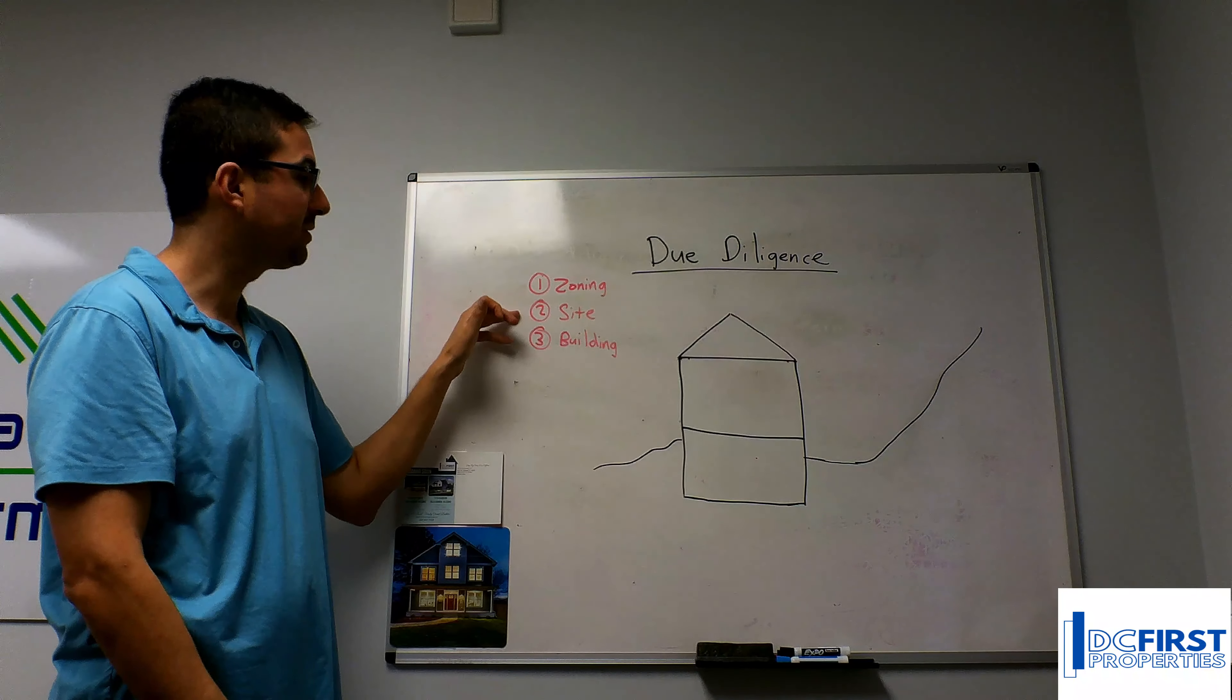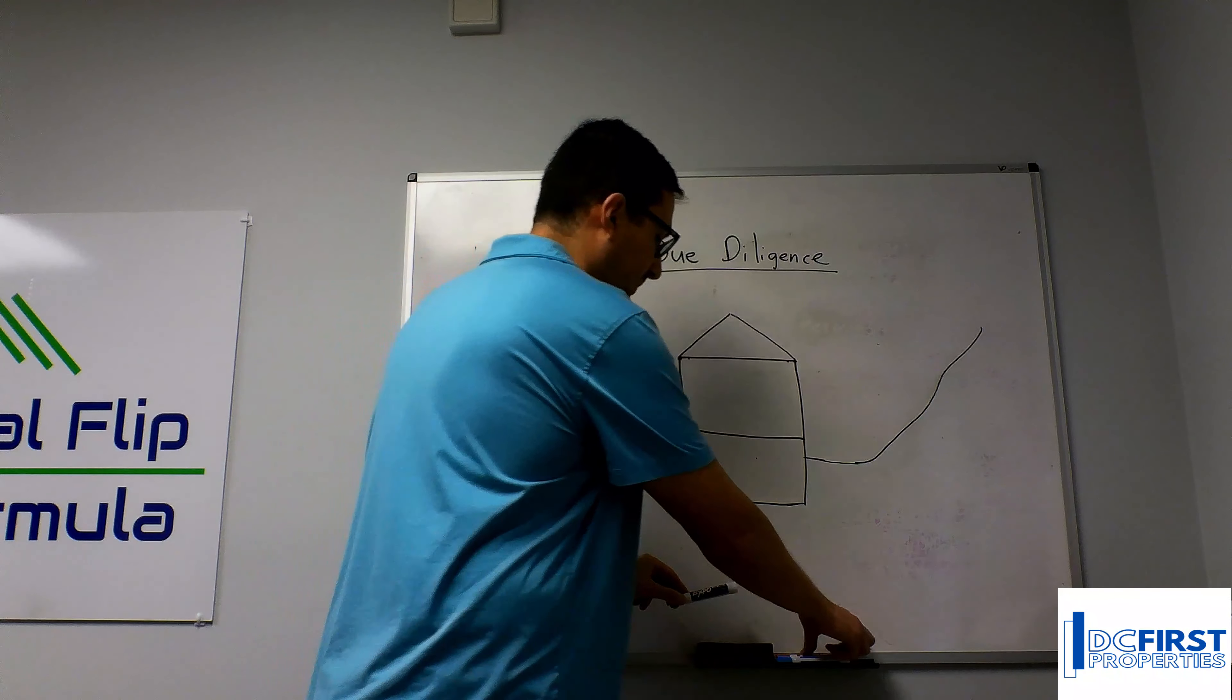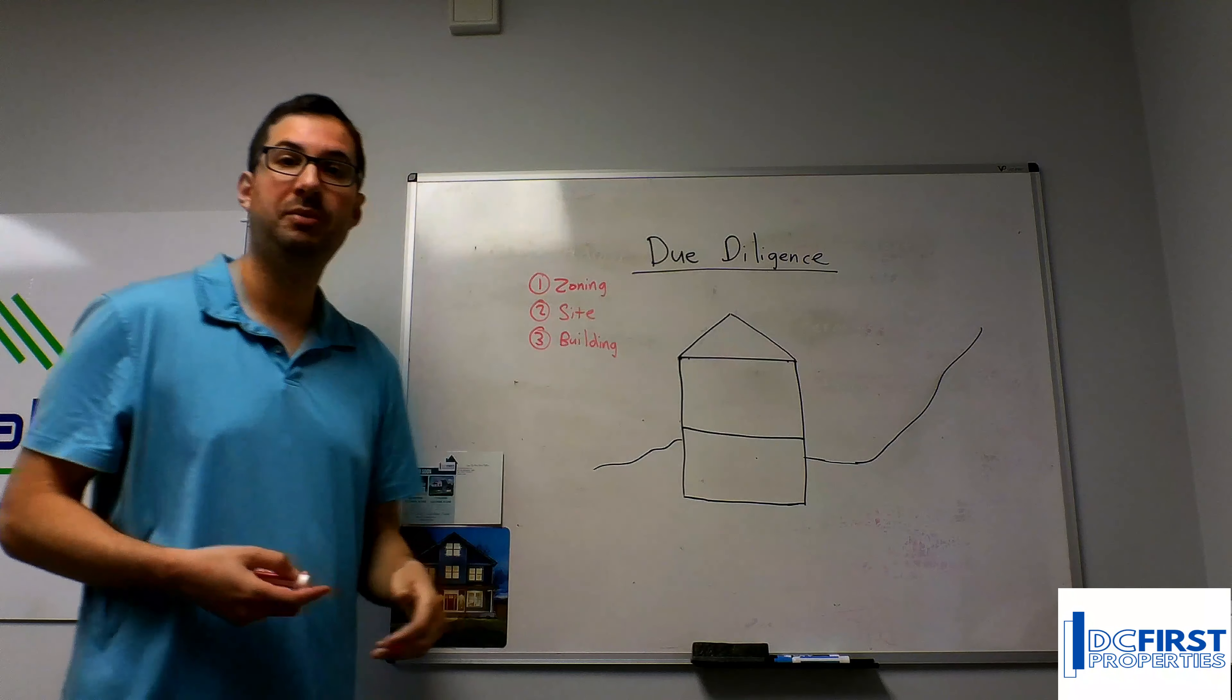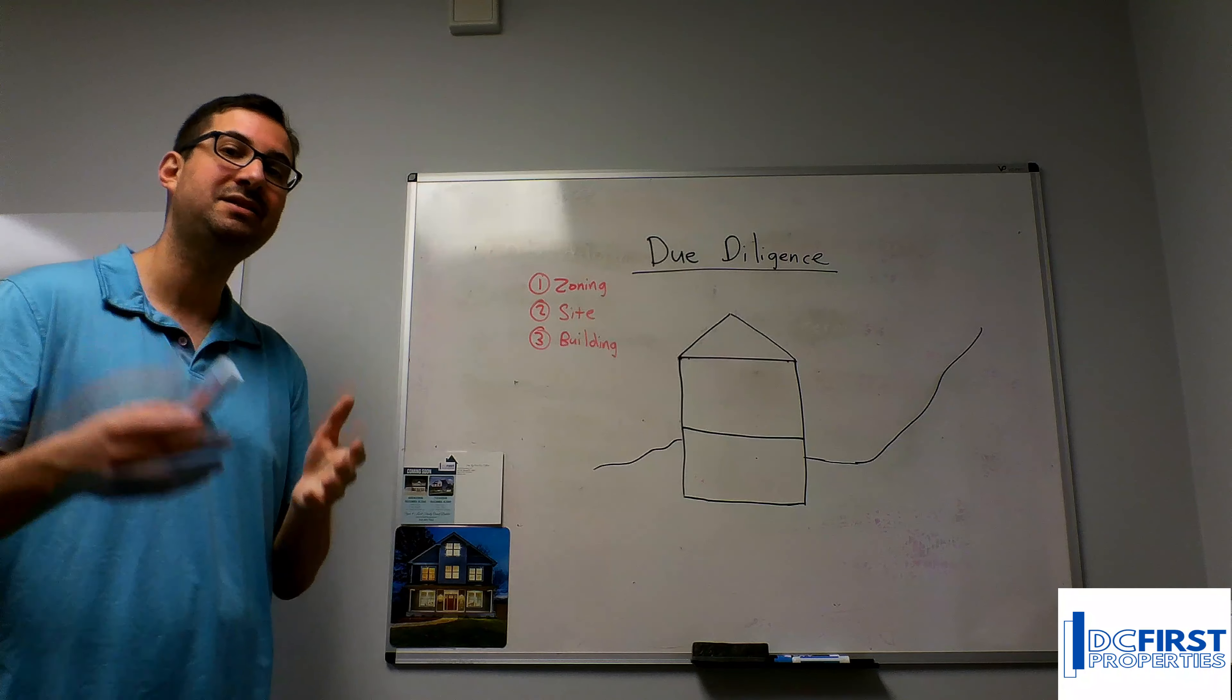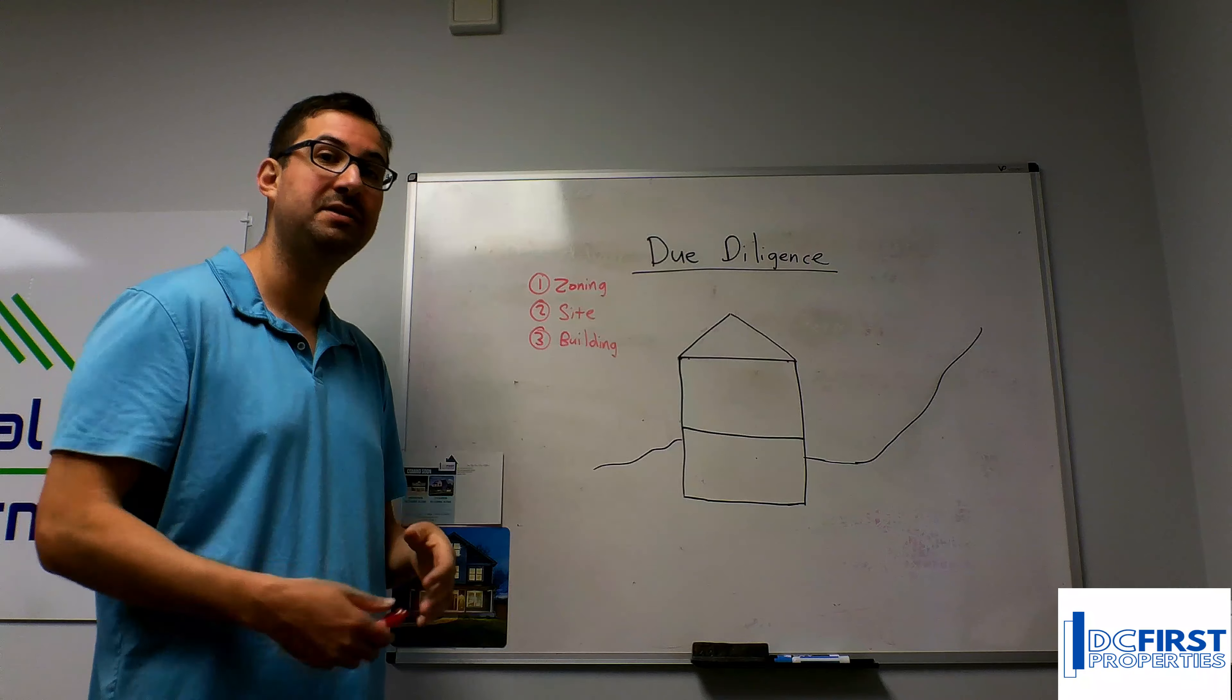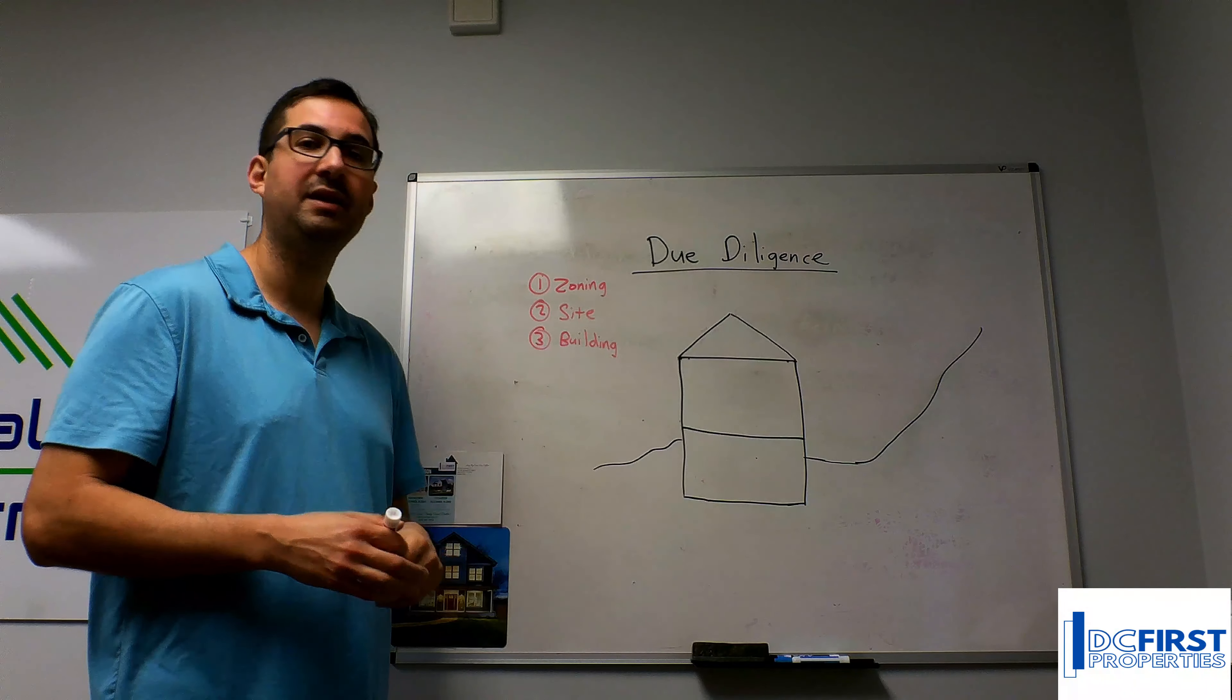The next core ingredient is site. Site starts to look at things like your soil reports. What kind of soil do you have here? Is it marine clay? Marine clay is one of the worst soils to build on. It's very expensive to put foundations on.